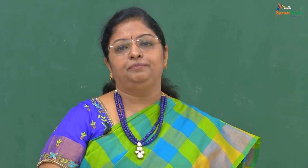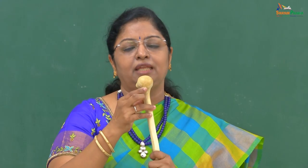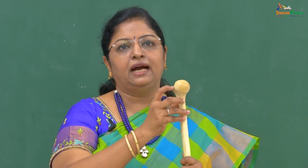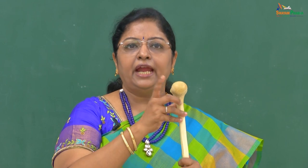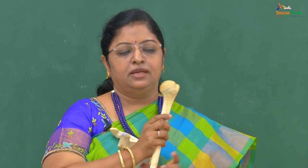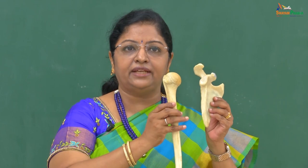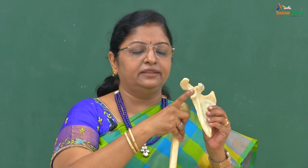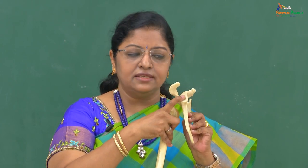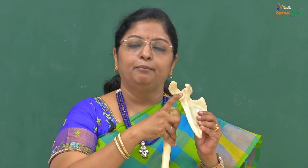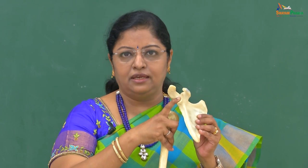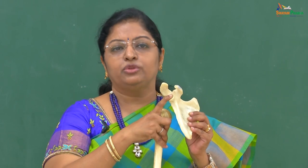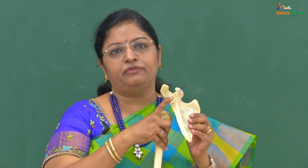Coming to the distal articulating surface, it is the ball — the hemispherical head of the humerus — also lined by hyaline articular cartilage. The head of the humerus is roughly three times the size of the glenoid cavity. As a result, the shoulder joint offers more mobility but at the expense of stability. That is a risk or complication of the shoulder joint.